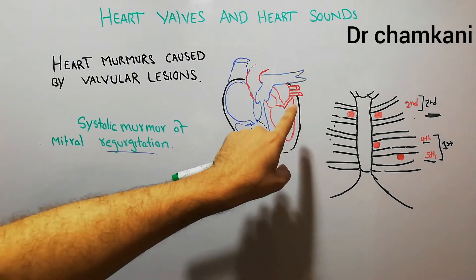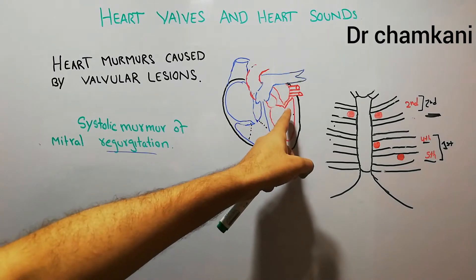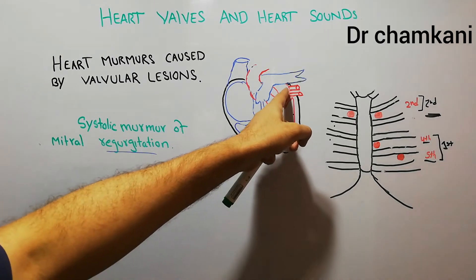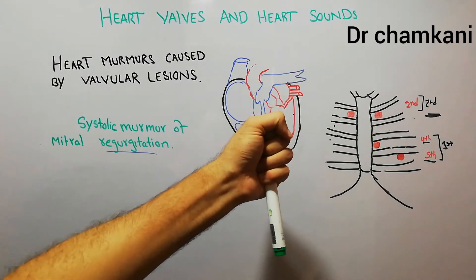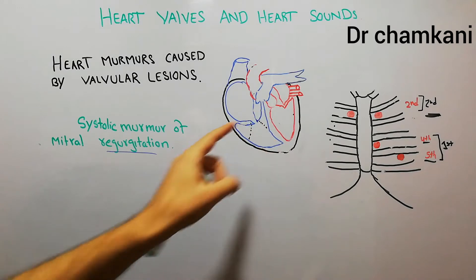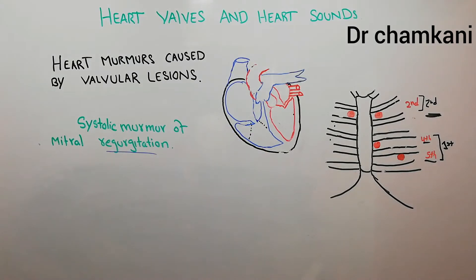When this valve becomes incompetent, it leads to movement of blood from left ventricle into left atrium during contraction of the left ventricle, and this is known as the murmur of mitral regurgitation and occurs due to incompetence of the mitral valve.